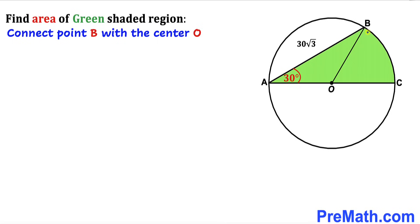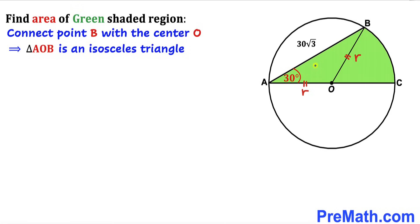I have connected point B with center O. We can see that OB and OA are both radii of the circle, each represented by lowercase r. As a result, triangle AOB is an isosceles triangle since those two sides are equal.